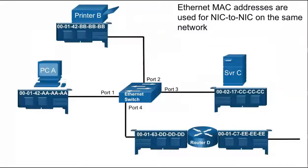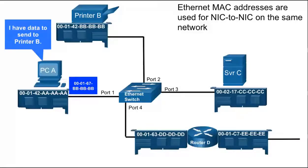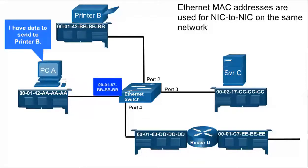Ethernet MAC addresses are used for NIC card to NIC card communications on the same network. On an Ethernet LAN there can be multiple devices. Similar to Talithia speaking to Jeremy, when a device on a LAN needs to communicate with another device on the same LAN, it is important that the device includes the MAC address of the destination in the message. Otherwise, the devices won't know who the message is for. When PCA sends a message to Printer B, it will send it to Printer B's MAC address.